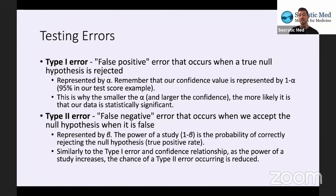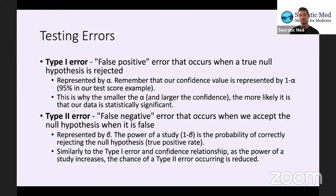99% confidence is even better than 95%. That P value will have to be even smaller because our alpha will be 0.01 with 99% confidence. It makes sense that it's more confident because our false positive rate is smaller — alpha is 0.01 instead of 0.05, so there's even less of a chance that an error would be committed.